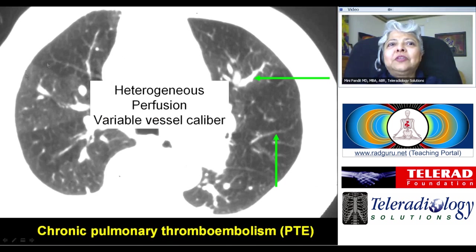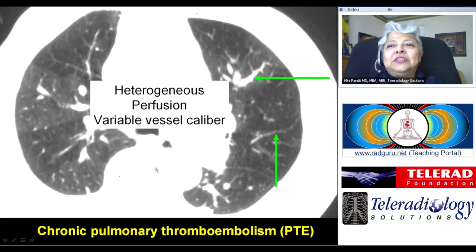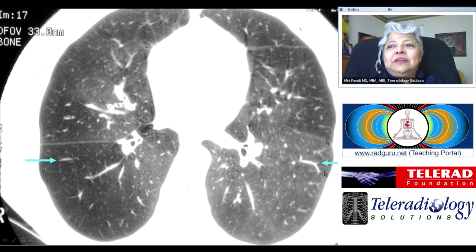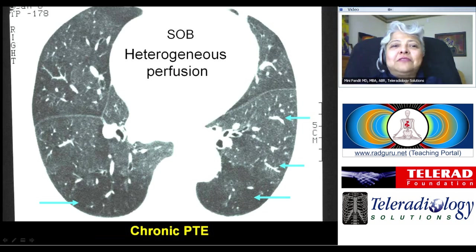You can see here that the larger vessel causes the lung to maintain its density, whereas attenuated vessels — probably occluded by the thromboembolic episode in the past — have given lucent areas. Basically it's the body's attempt to redistribute perfusion away from the non-functioning pulmonary circulation. Another example shows hyperlucent areas with attenuated vessels and denser areas with prominent vessels — again chronic pulmonary thromboembolism.